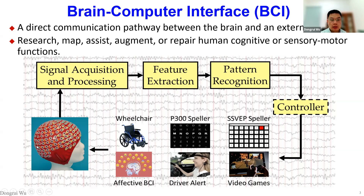First, we collect brain signals using an EEG headset or some invasive sensors. After that, we perform signal processing to increase the signal-to-noise ratio and remove artifacts. Then we perform feature extraction to reduce dimensionality and extract more informative features. We then perform pattern recognition to understand what the brain signal means. Based on the decoded brain signals, we can design controllers to control external devices such as a wheelchair or a game, or perform text input such as with P300 and SSVEP spellers. This is a closed-loop BCI system.